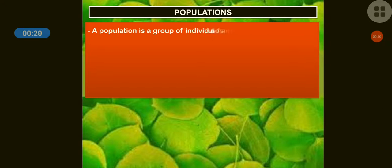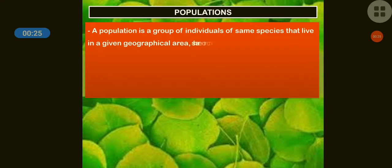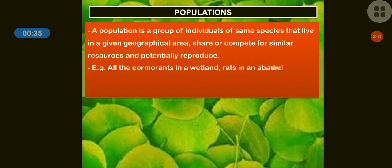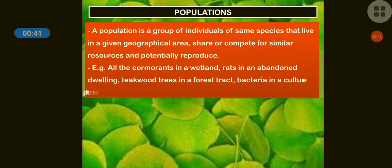Population is a group of individuals of the same species that live in a given geographical area. So, for the population definition, one simple concept: same species — a group of individuals of the same species that live in a given geographical area.